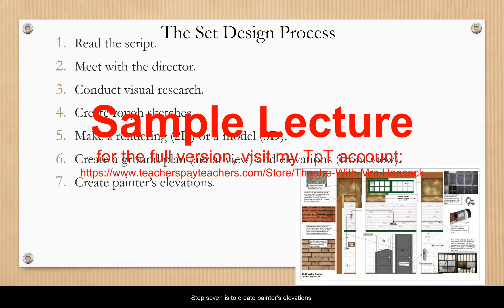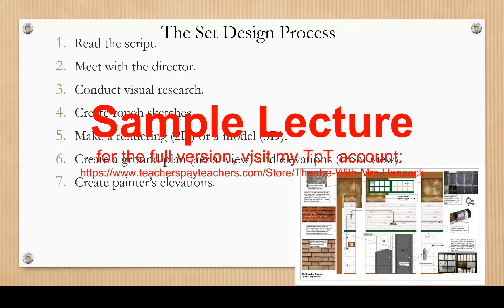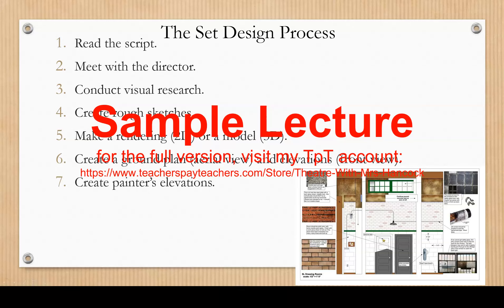Step seven is to create painters' elevations. But wait — didn't we make elevations or front views of the scenery during the last step? Yes, but these elevations aren't for the carpenters; they are for the painters. So they show color, texture, and other details needed by the painters to realize your set exactly as you envision it.